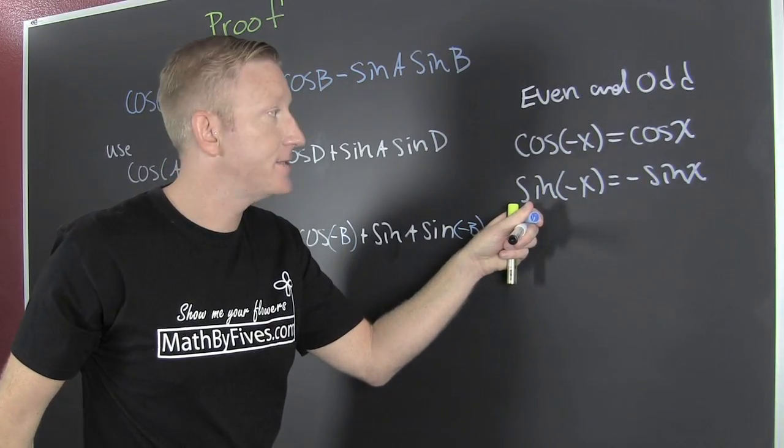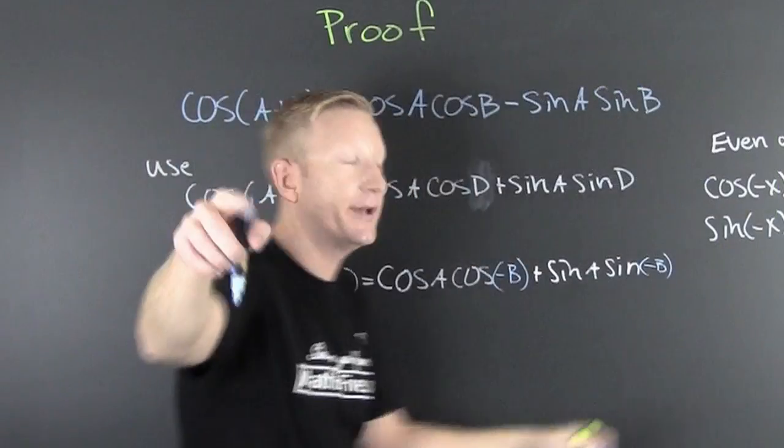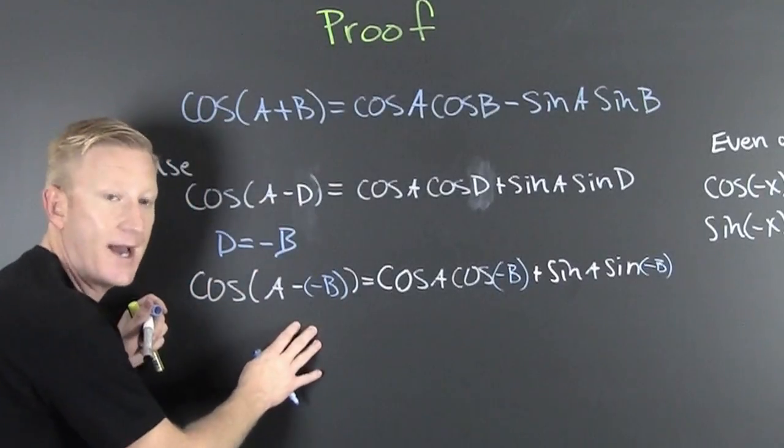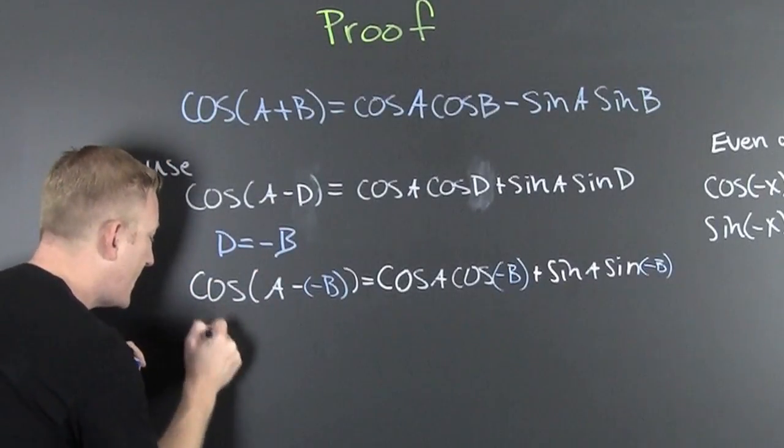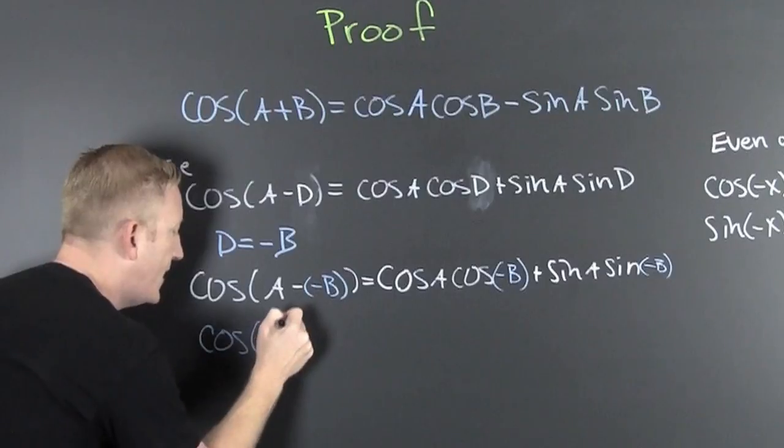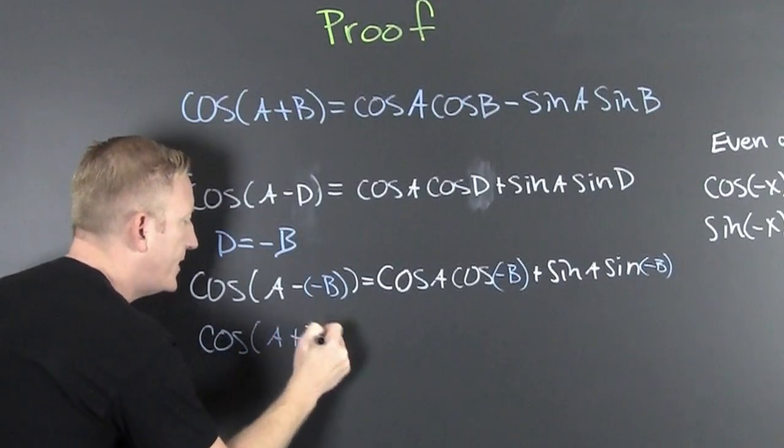Now, we are going to use these guys now. We plug them over here now. I clean up that left-hand side. That's the cosine of A minus a minus B.